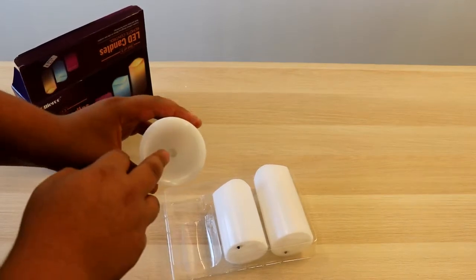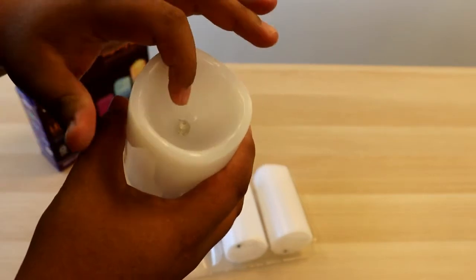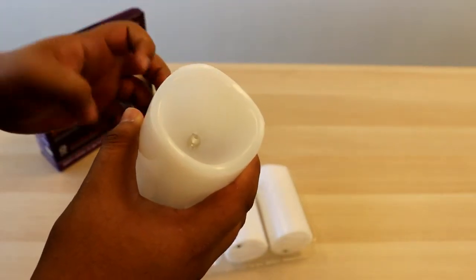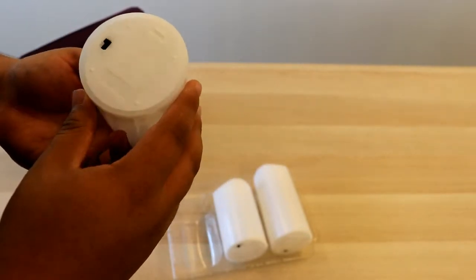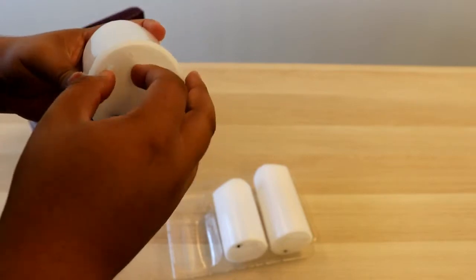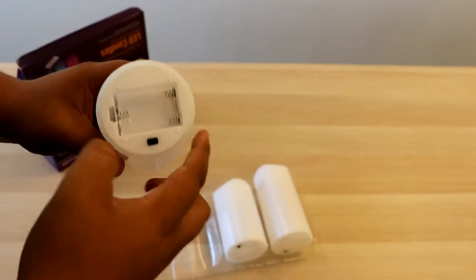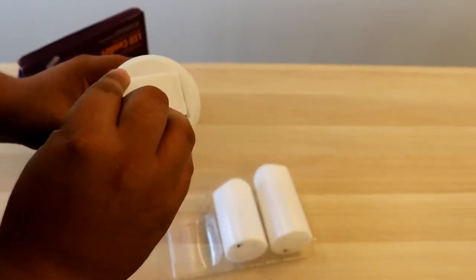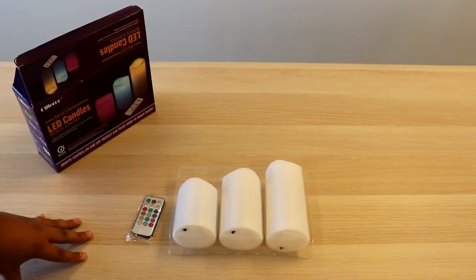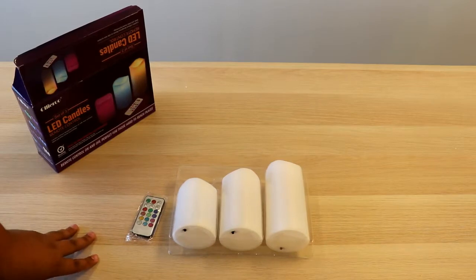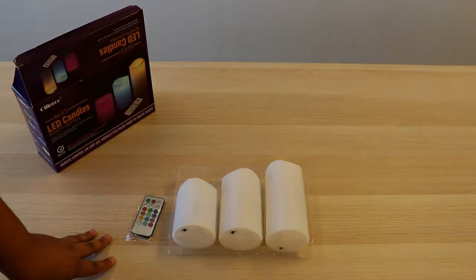So as you can see, there's a light for it to flicker. Underneath, there's a switch telling you if it's on or off. And then for the batteries, they require triple A batteries. Let me get those real quick so I can show you the features and what the candles should look like when they're powered up.